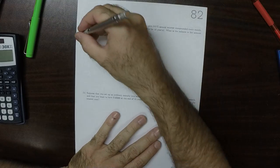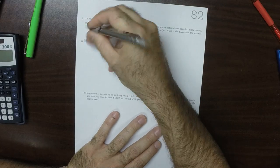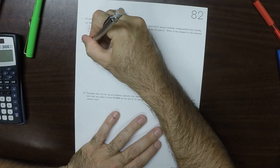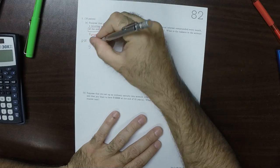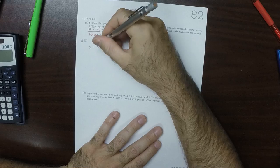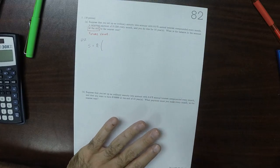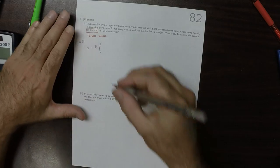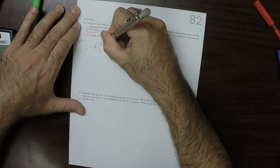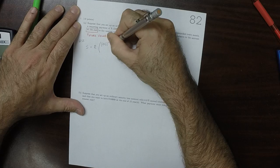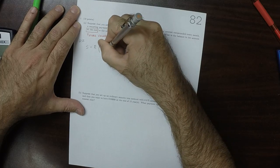We're going to use the formula S equals R multiplied by 1 plus I to the power N minus 1 divided by I.